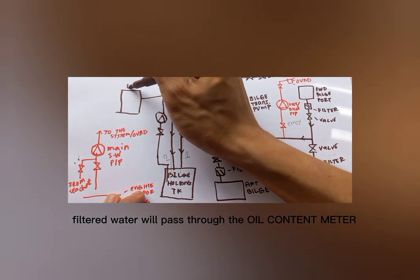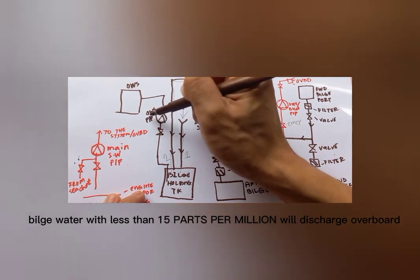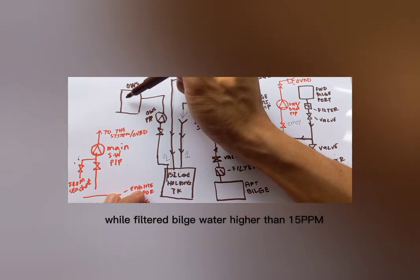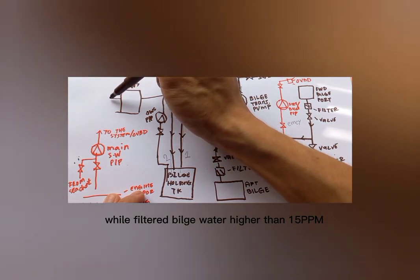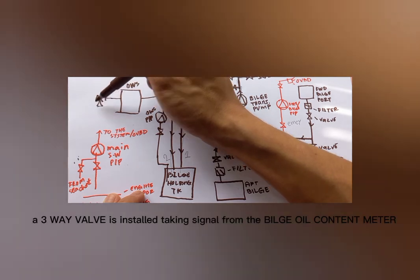Filtered water will pass through the oil content meter. Bulge water with less than 15 parts per million will discharge overboard, while filtered bulge water higher than 15 ppm will send back to the bulge holding tank. A three-way valve is installed taking signal from the bulge oil content meter.